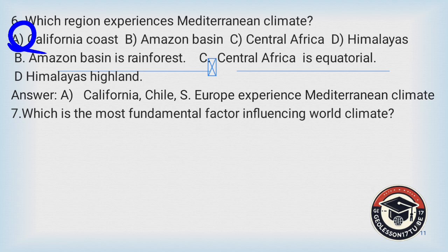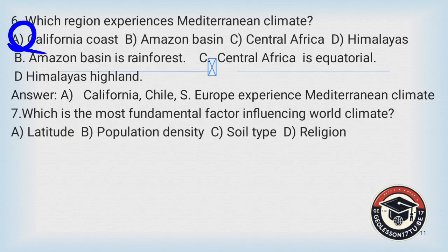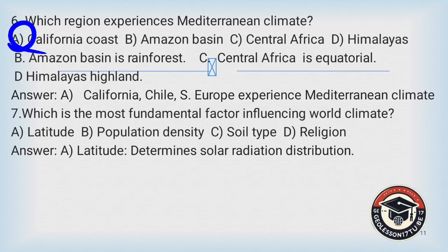Question number seven: Which is the most fundamental factor influencing world climate? A) latitude, B) population density, C) soil type, D) religion. Latitude determines solar radiation distribution, so the correct answer is A.